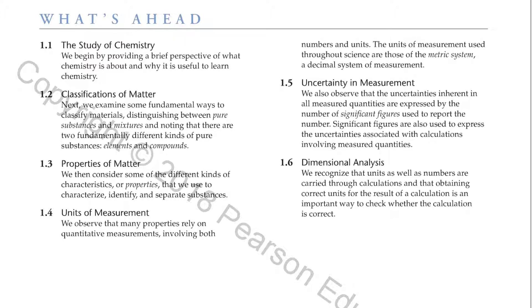Section 1.3: Properties of Matter. We then consider some of the different kinds of characteristics or properties that we use to characterize, identify, and separate substances.